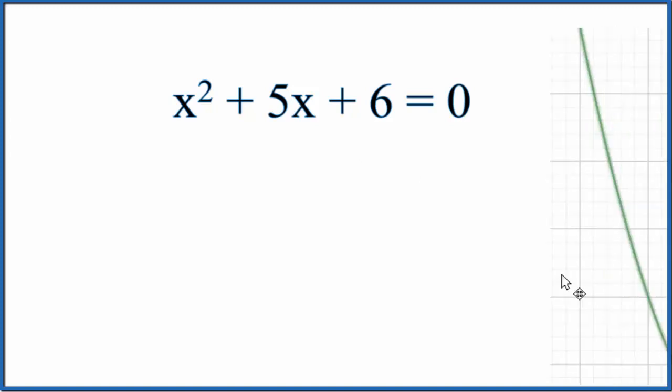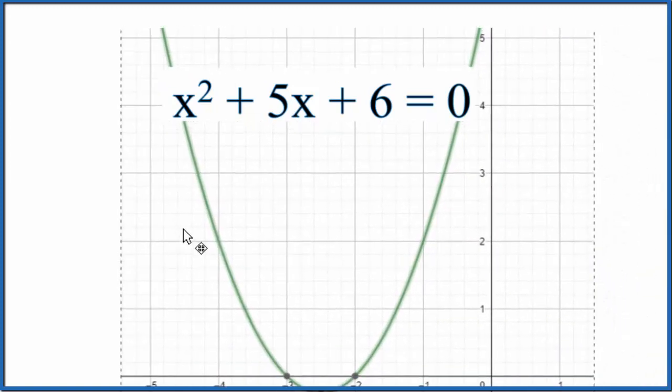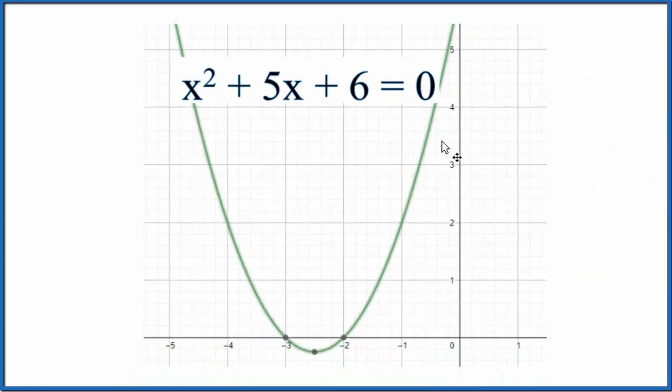If we had the graph, we could figure it out right away. So here's our graph, and we're looking for what values of x on the graph, this parabola, equals 0. That's where it crosses the x-axis. So we already know the solution should be minus 3 and minus 2.